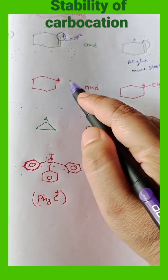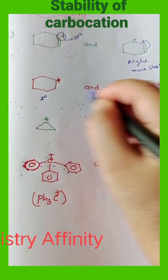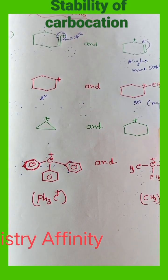Now if I compare the second one, this is a 2 degree carbocation and this is a 3 degree carbocation. So it will be more stable.